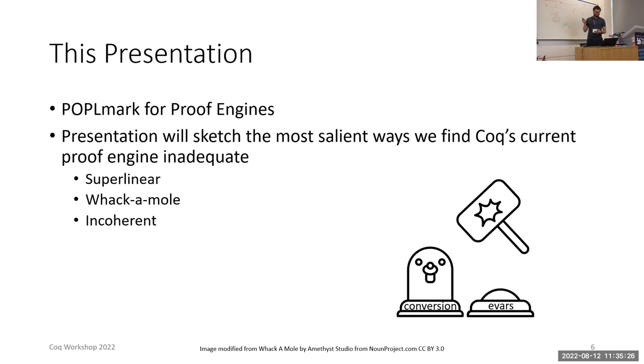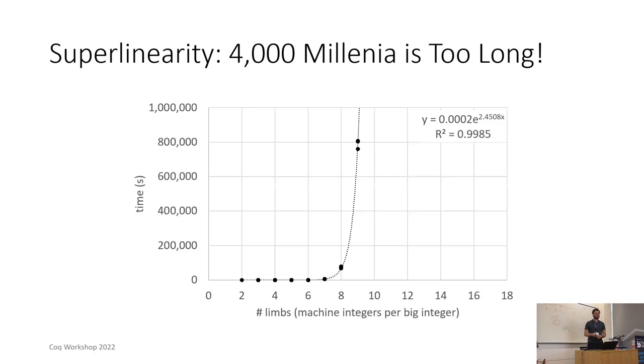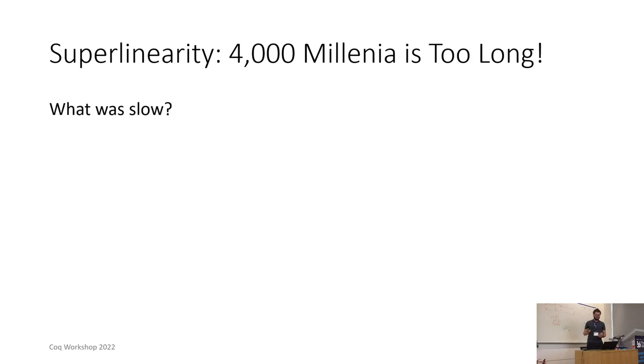Performance issues in Coq are egregious because they are super linear. How bad are they? They are at least 4,000 millennia bad. Real-world example from my PhD. You can see here a performance plot where a proof script that worked fine on an example of size 2 taking 17 seconds was projected to take over 4,000 millennia on an example of size 17. No one has that long to wait.